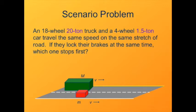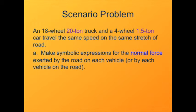Here's a problem to help us understand how friction works on different objects. We have a 20-ton truck and a 1.5-ton car traveling on the same road at the same speed. If they lock their brakes at the same time, which one stops first? When the brakes are locked, the tires are skidding, so we're dealing with kinetic friction. First, we need the normal force. For a level road, the normal force equals the weight — mass times the gravitational field — for both the car (mass m) and the truck (mass M).